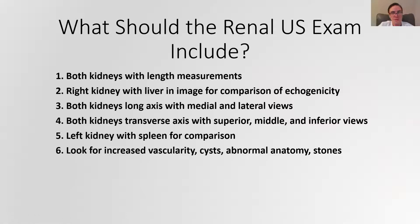You want to get a medial view and a lateral view on the long axis. Then you also want the transverse axis — cuts at the top, middle, and bottom of the kidney. You'll want comparison shots for both kidneys: for the right kidney, get an image with the liver so you can compare the echogenicity or brightness of the kidney to the liver. For the left kidney, compare it to the spleen, which gives you a sense of how echogenic it is and what conditions you need to be concerned about.